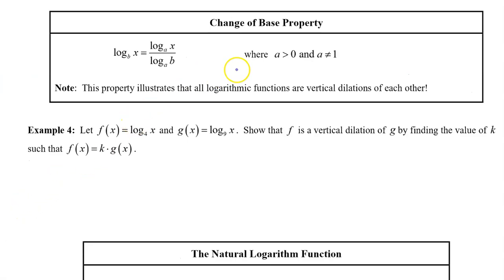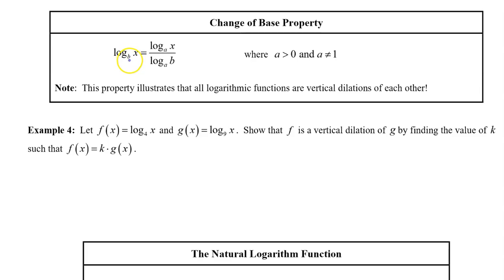Here's a fourth property I need you to memorize. This is the change of base property, which says that the log base b of x can be rewritten as the quotient of two logs with a new base a. This base a could be anything as long as it is positive and not 1 — it could be 10, e, or 7, whatever you like. To help remember which thing goes in the numerator and which in the denominator, notice that the base b is a subscript — b is low. So the b ends up in the denominator, and the other thing goes high.